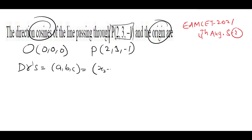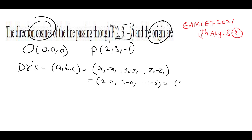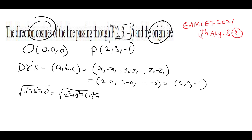Using the formula: DR = (x₂ − x₁, y₂ − y₁, z₂ − z₁) = (2−0, 3−0, −1−0) = (2, 3, −1). Now find √(a² + b² + c²) = √(4 + 9 + 1) = √14.